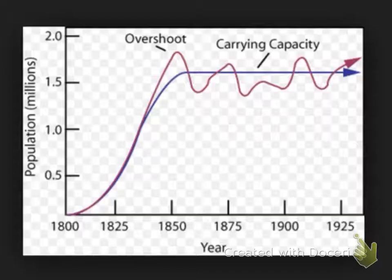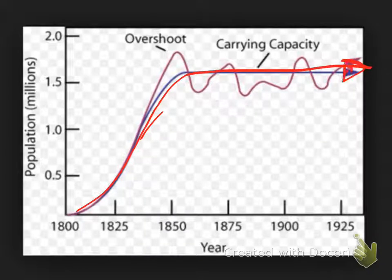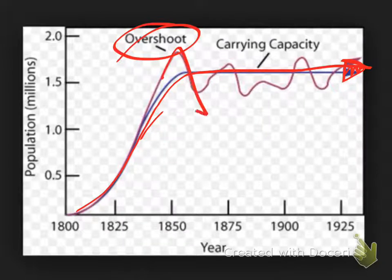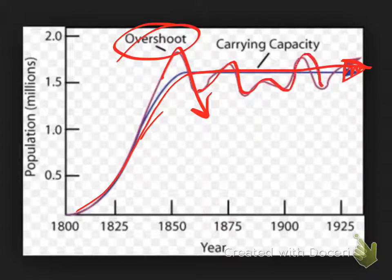Looking at this graph, the blue line represents carrying capacity — how many individuals the environment can support. There's an overshoot where the population spiked, but then it dropped because the environment couldn't support it. It then dropped below carrying capacity and went back up, oscillating around that line. When a population goes over or below the carrying capacity, there are drastic changes because there must be enough resources to support the species.